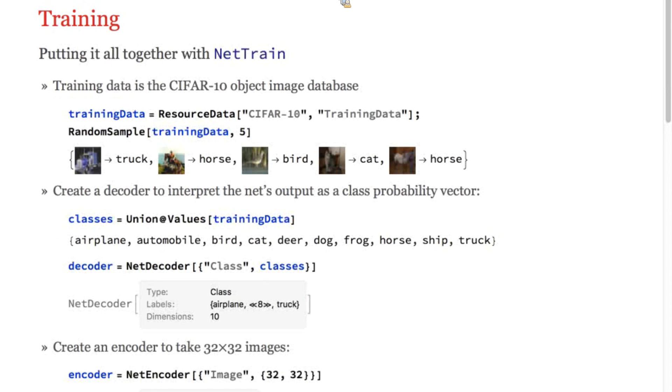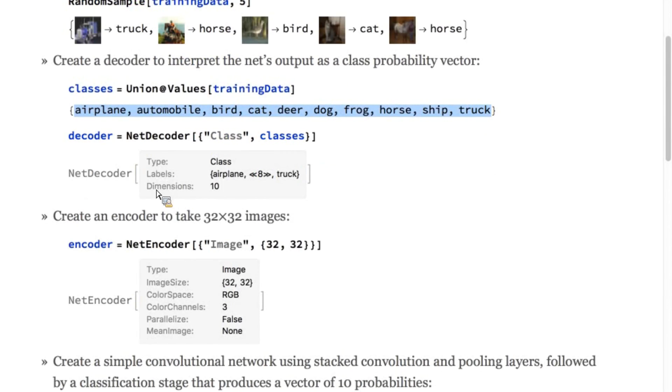Let's do an example that pulls everything together. This example shows a simple convolutional net being trained to recognize objects in the CIFAR10 dataset. First, we obtain the training data using the resource data function. Then, we create a decoder to interpret the output of the net as the probabilities of each of the ten classes. Here are the ten classes, and here's the decoder.